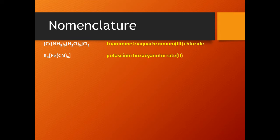The second example is K₄[Fe(CN)₆]. The cation K⁺ is outside the bracket, so we name potassium first. CN⁻ is an anionic ligand ending in '-ide', so per Rule 5 'ide' is replaced with 'o', giving 'cyano'. There are six cyanide ligands, so the prefix 'hexa' is used. The full name is potassium hexacyanoferrate(II).